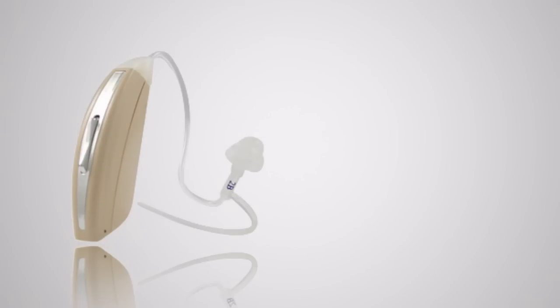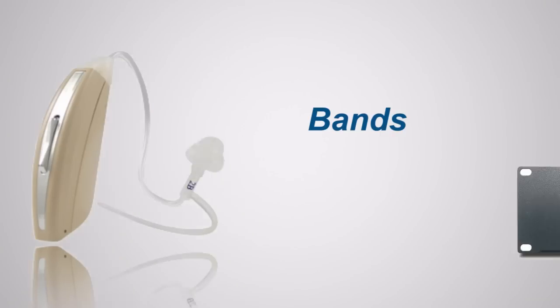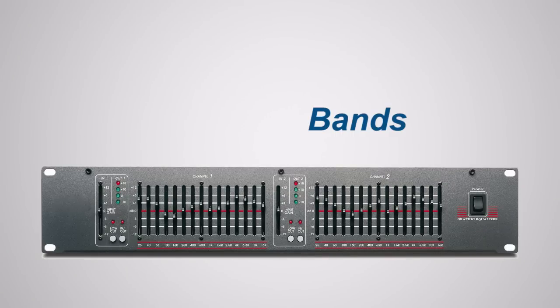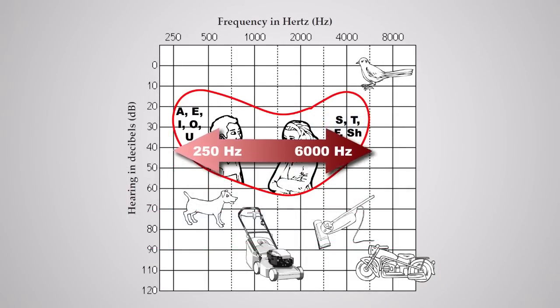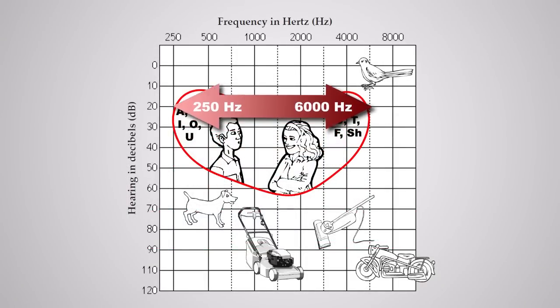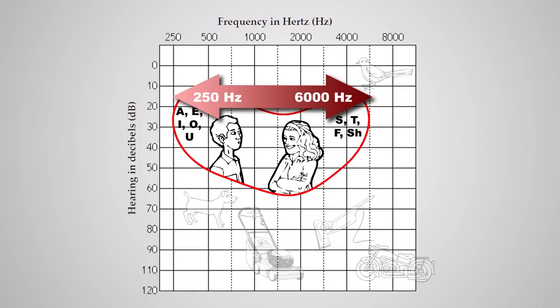Hearing aids do this by working with bands and channels. First, let's look at bands. Bands are just like stereo equalizers. They're used to control volume at different frequencies. This allows us to adjust more volume in a specific area of your hearing loss without affecting other areas where you might need less volume.